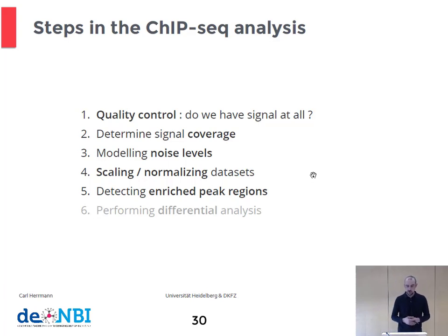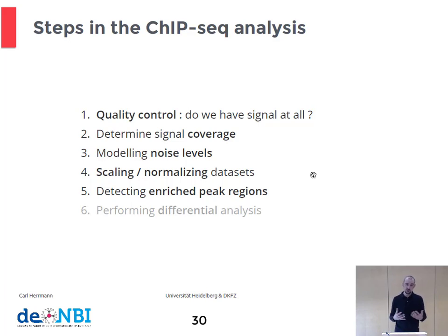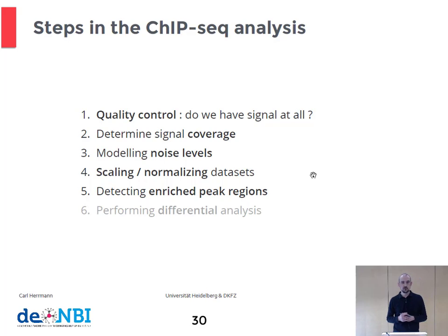To summarize what we've discussed: we covered quality control as the first step in any sequencing data analysis, including qualitative QC and quantitative measures such as the PCR bottleneck coefficient and fraction of reads in peaks. We've seen how to convert reads or BAM files into coverage or bigWIG files, and how to scale the input and treatment tracks to make them comparable. Finally, we discussed how to determine enriched peak regions, describing in detail how the MACS2 algorithm works. The last point — differential analysis when comparing two conditions such as treatment vs. no treatment, or disease vs. healthy — will not be detailed in this lecture.